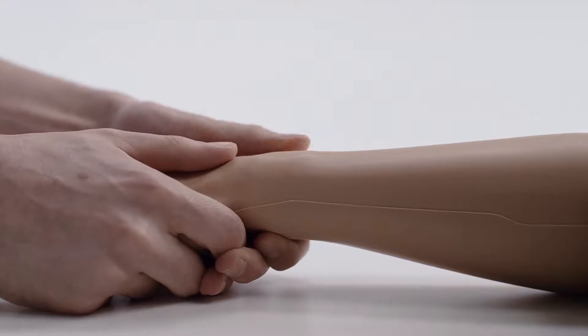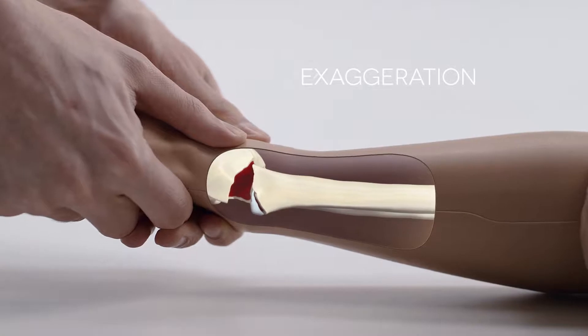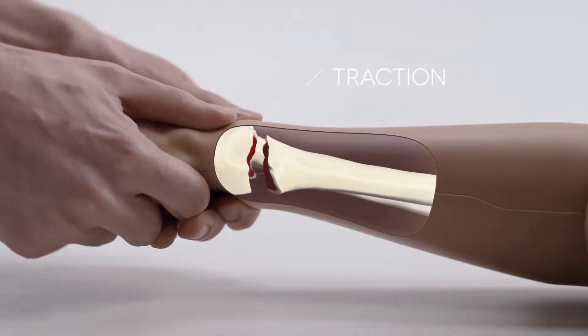Training in teams, trainees can perform all three stages of reduction: exaggeration, traction, and flexion.